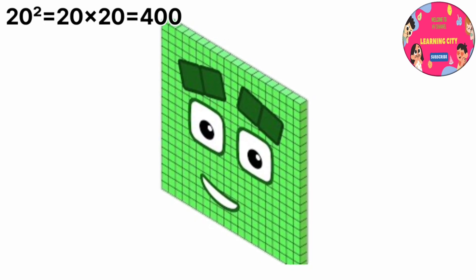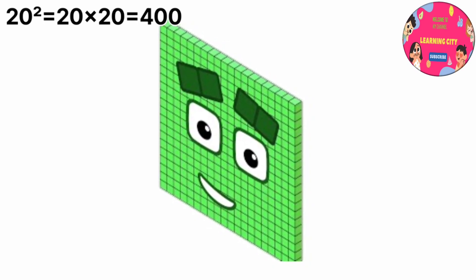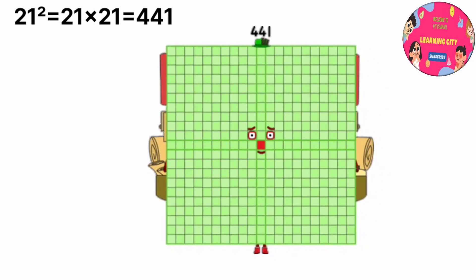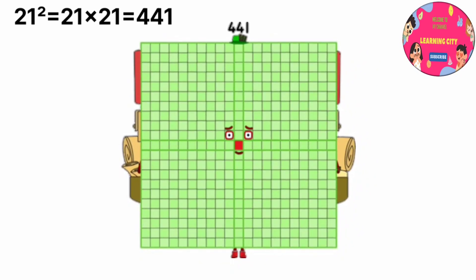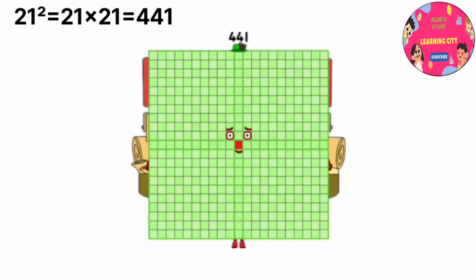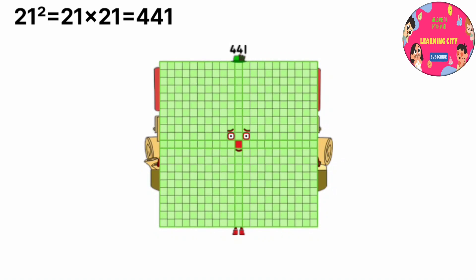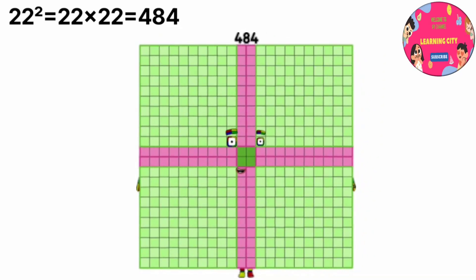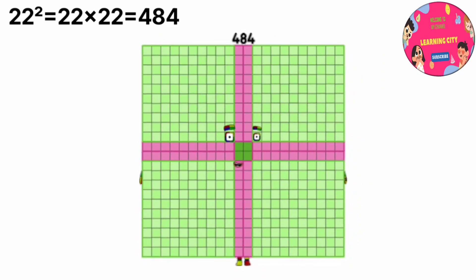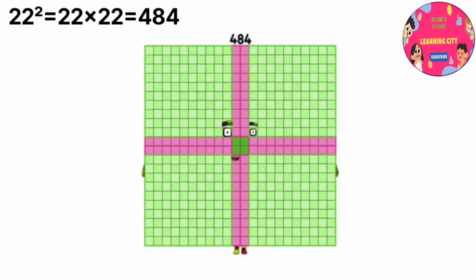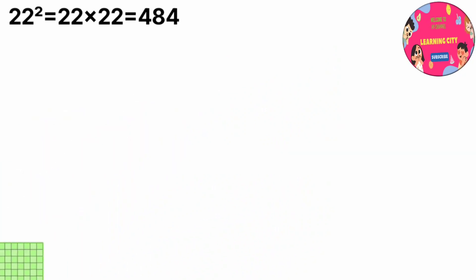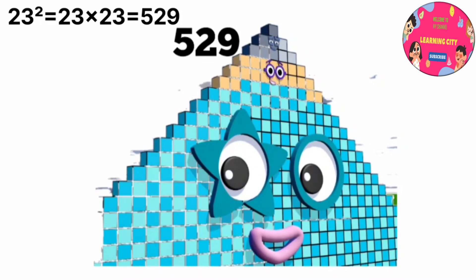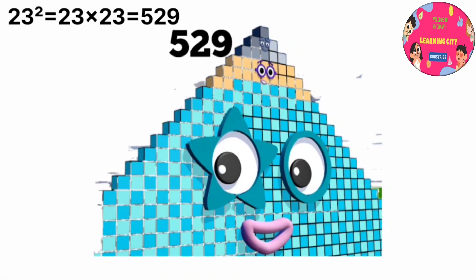20 power 2 equals 400, or 20 multiply by 20 equals 400. 21 power 2 equals 441. 22 power 2 equals 484, or 22 multiply by 22 equals 484. 23 power 2 equals 529, or 23 multiply by 23 equals 529.